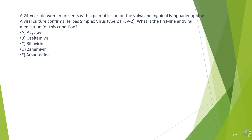A 24-year-old woman presents with a painful lesion on the vulva and inguinal lymphadenopathy. A viral culture confirms herpes simplex virus type 2 (HSV-2). What is the first-line antiviral medication for this condition?